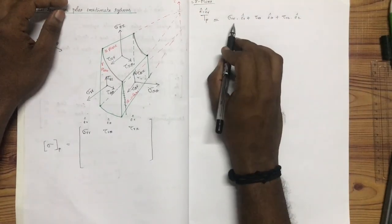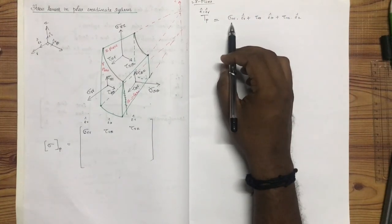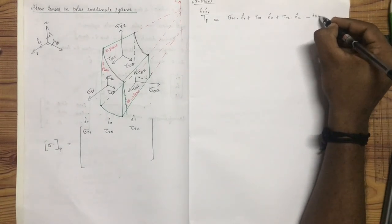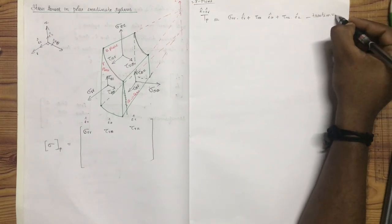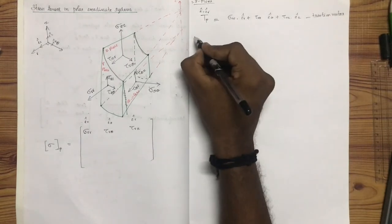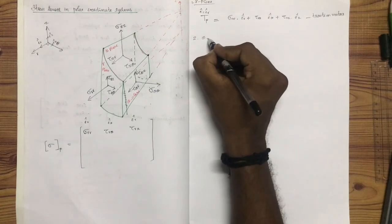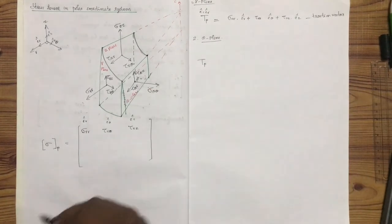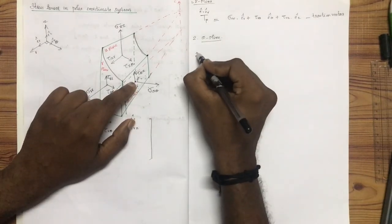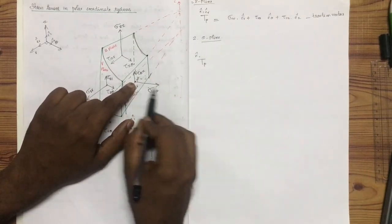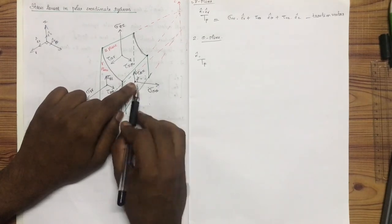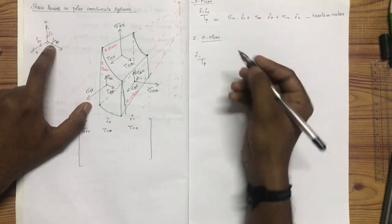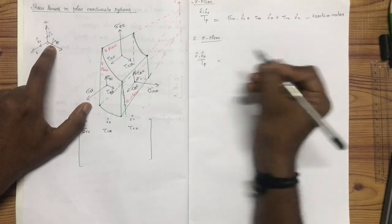We will not compute Sigma-RR as a vector here. In the R-plane we will have a traction vector. We will have a traction vector in the theta plane as well. The power of the unit normal vector is theta. If you have the unit normal vector, it will be equal to e-cap theta. We will have three directions.